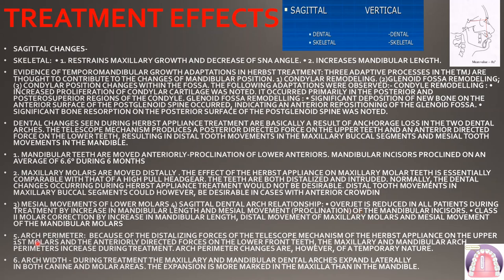Regarding arch perimeter: because of the distalization forces of the telescopic mechanism on the upper first molars and the anterior-directed forces on the lower front teeth, both the maxillary and mandibular arch perimeters increase. The arch perimeter increases because of the anterior displacement of the lower teeth and the posterior displacement of the upper teeth. However, this increase is temporary in nature.